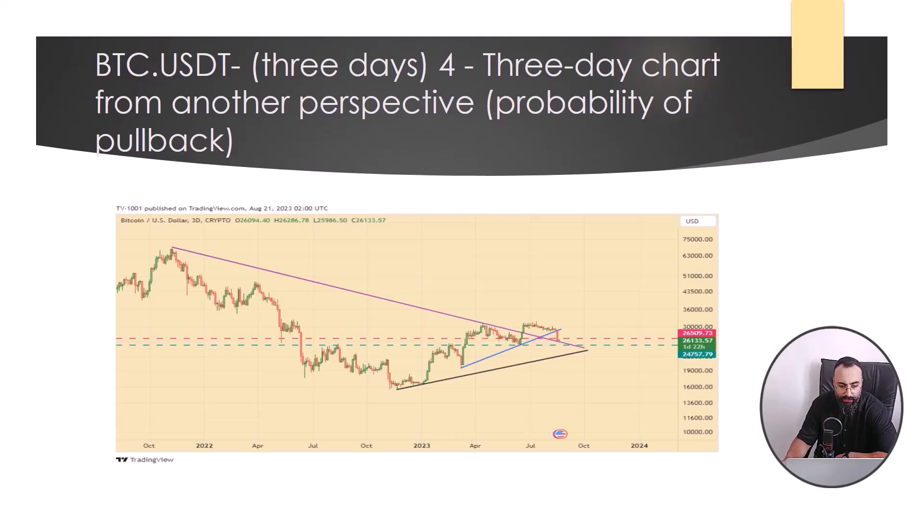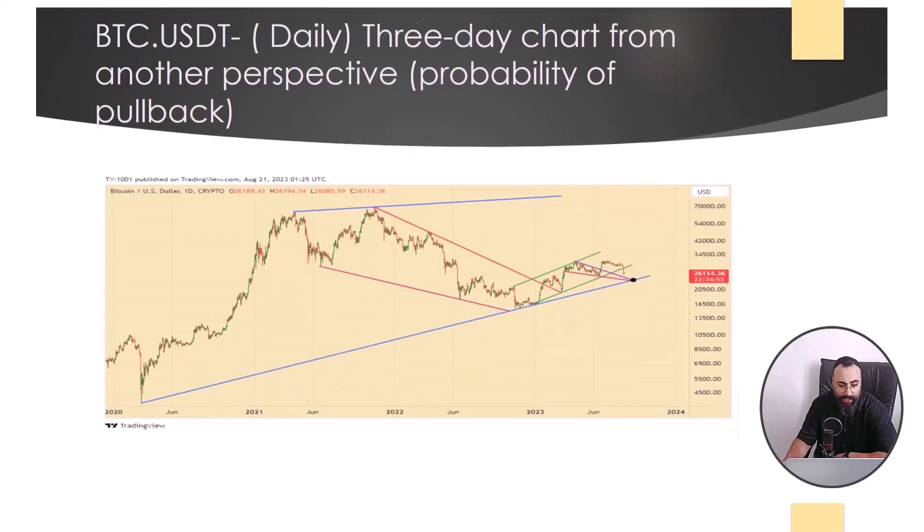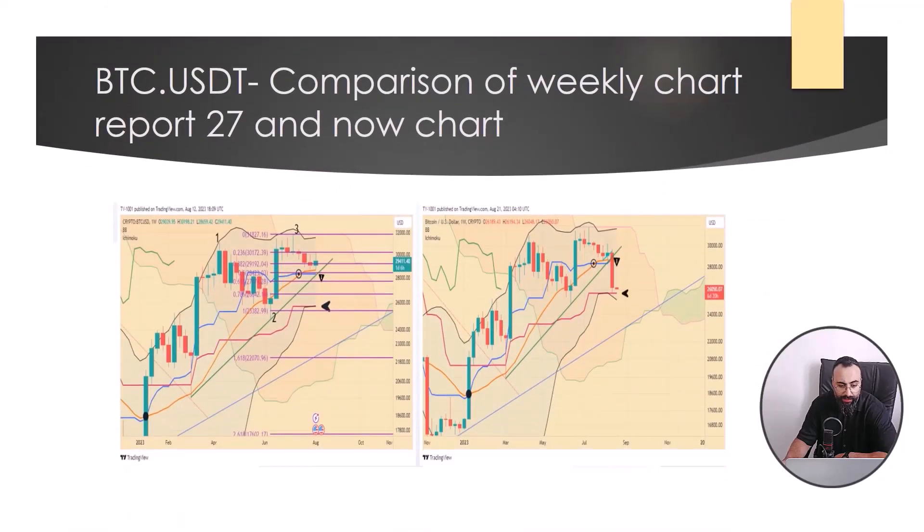Instead of the blue corner that we consider in the three-day chart, this time we can pay attention to the green channel in the chart, in which case there is a possibility of price decrease and pullback to the proper trend. In comparison of weekly chart reports of 27th and now the chart, we can see these two figures. The left side is chart of last week's reports and the right side we have the same chart.